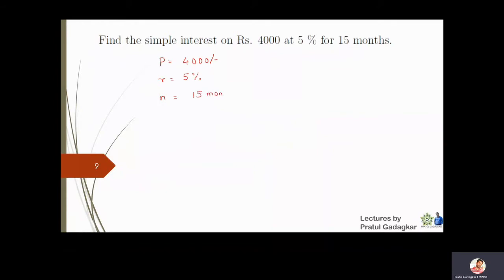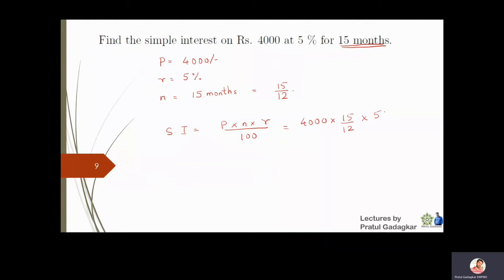15 months converted to years is 15/12, because there are 12 months in a year. So the formula for simple interest becomes: SI = P × n × r / 100 = 4000 × (15/12) × 5 / 100.